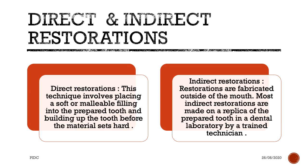Indirect restorations are fabricated outside of the mouth. Most indirect restorations are made on a replica of the prepared tooth in a dental laboratory by a trained technician. Basically, the one which we do directly onto the patient's tooth is what we call a direct restoration. For example, a direct composite restoration.